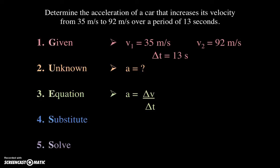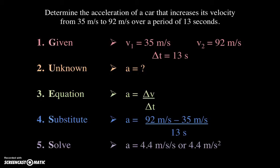So if we substitute our givens into our equation, we would have that the acceleration is equal to 92 meters per second, which is the final velocity, minus 35 meters per second, which is the starting velocity, divided by the change in time of 13 seconds. Punching that into our calculator gives us a final acceleration of 4.4 meters per second per second, also called 4.4 meters per second squared. And that's it. That's the acceleration of the car. Let's take a look at another example.